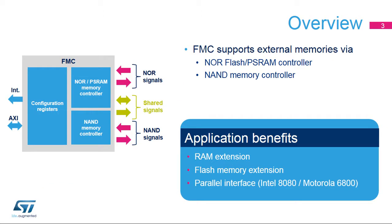The FMC controller, integrated in STM32 MP1 microprocessors, provides external memory support through two memory controllers: the NOR Flash and PSRAM memory controller, and the NAND Flash memory controller. This enables the CPU to communicate with external memories including NOR and NAND Flash memories, PSRAM, and SRAM.